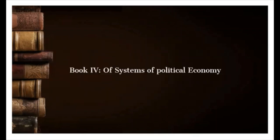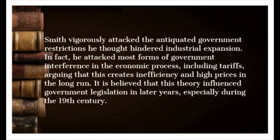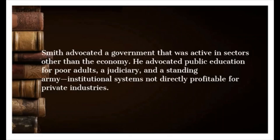Book Four: 'Of Systems of Political Economy.' Smith vigorously attacked the antiquated government restrictions he thought hindered industrial expansion. He attacked most forms of government interference in the economic process, including tariffs, arguing that this creates inefficiency and high prices in the long run. It is believed this theory influenced government legislation in later years, especially during the 19th century. Smith advocated a government that was active in sectors other than the economy — he advocated public education for poor adults, a judiciary, and a standing army — institutional systems not directly profitable for private industries.